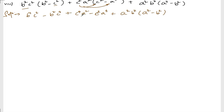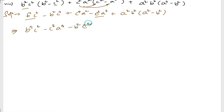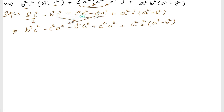Now let us try to take common — something like a minus b. Let me write the terms together: b to the power 4 c squared minus c squared a to the power 4, then write these two together: minus b squared c to the power 4 plus c to the power 4 a squared, plus a squared b squared into a squared minus b squared.